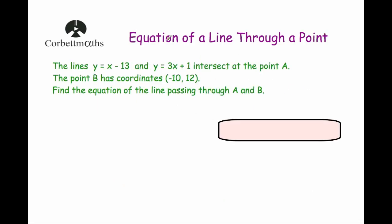Now for our last example. The lines y equals x minus 13 and y equals 3x plus 1 intersect at the point A. The point B has coordinates (-10, 12). Find the equation of the line that passes through points A and B. This question is similar to the last one, except we need to work out the point A first by finding where these lines intersect.